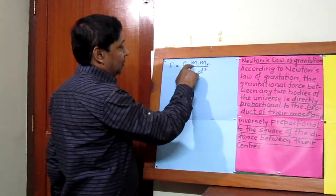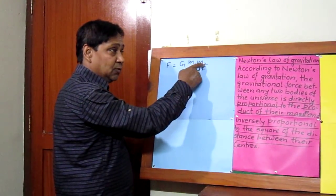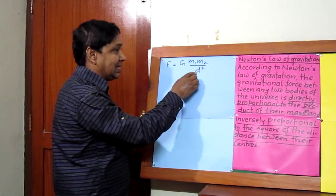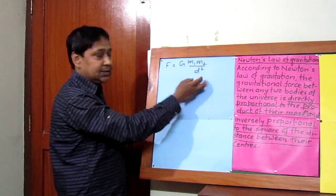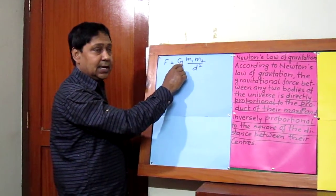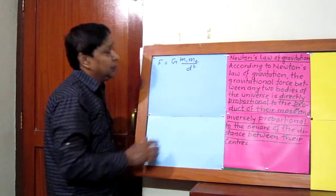m1 means mass of first body, m2 is mass of second body, and d represents the distance between two bodies. G is the gravitational constant, and F is the gravitational force.